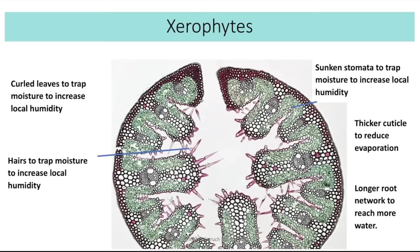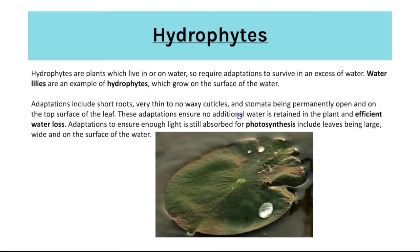Hydrophytes are plants which live in or on water and require adaptations to survive in excess water. Water lilies are an example — their adaptations include short roots, very thin to no waxy cuticle, stomata permanently open and on the top surface of the leaf. These ensure no additional water is retained and efficient water loss occurs. To ensure enough light is absorbed for photosynthesis the leaves are very large and wide on the surface of the water.